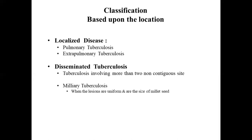A person is said to have miliary tuberculosis if the patient has got tubercular lesions in the lungs that are uniform and are the size of a millet seed.